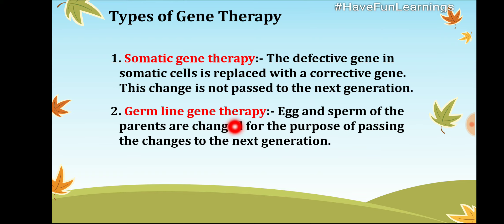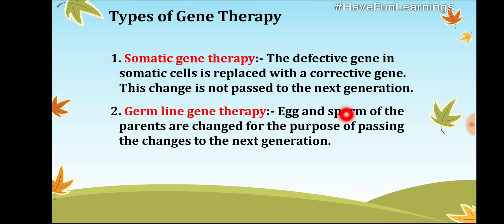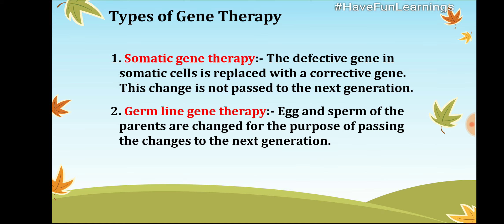In germline gene therapy, the egg and sperm of the parents are changed for the purpose of passing the genetic changes to the next generation. These are the two types of gene therapy.